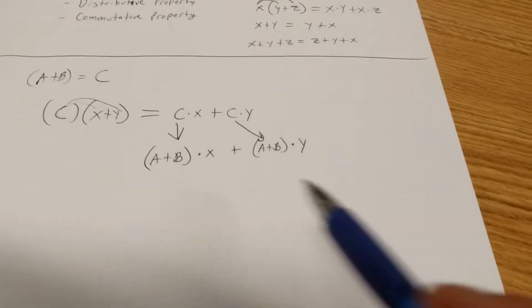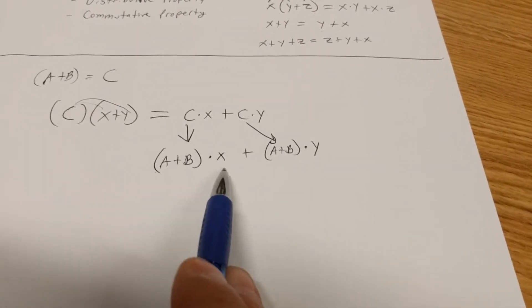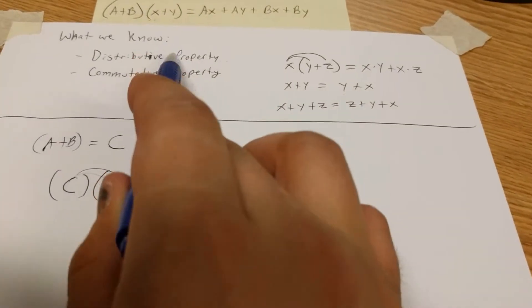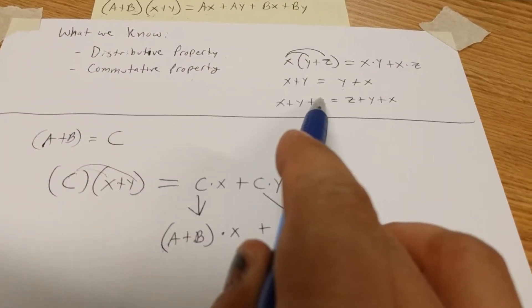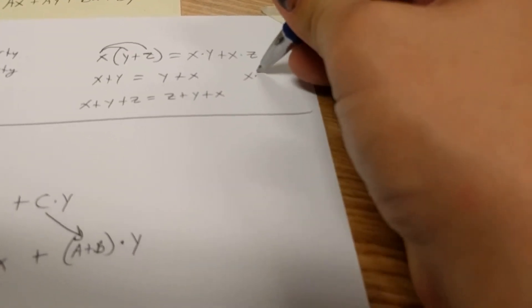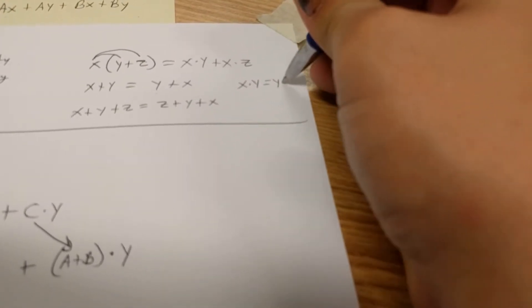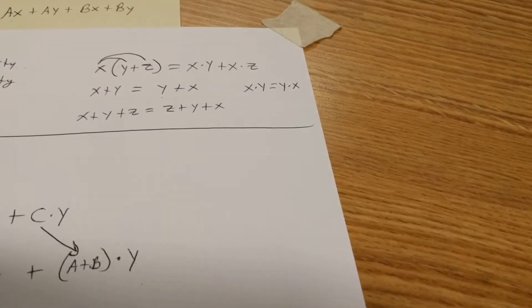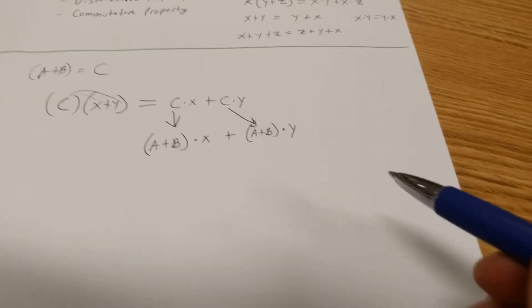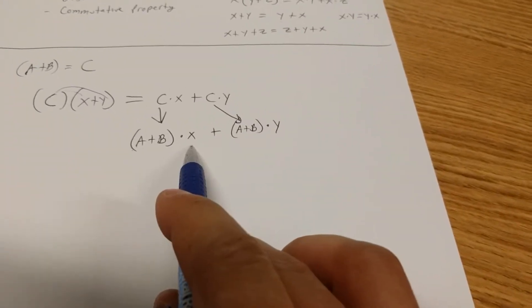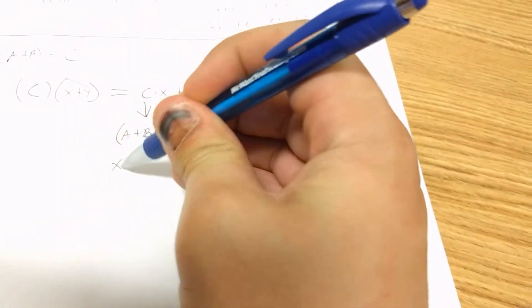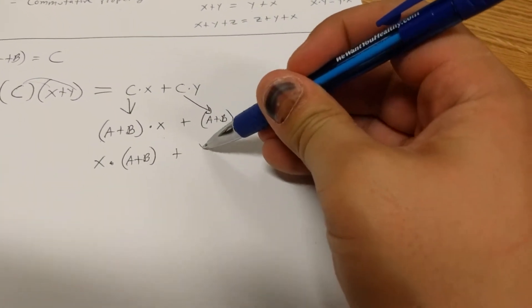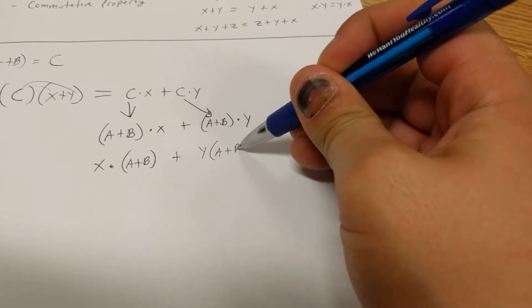The last thing we need to do is take a look at a plus b times x and a plus b times y. We talked about the commutative property with addition. I showed an example, but it also works for multiplication. So x times y equals y times x. We're going to use that as justification here as well.